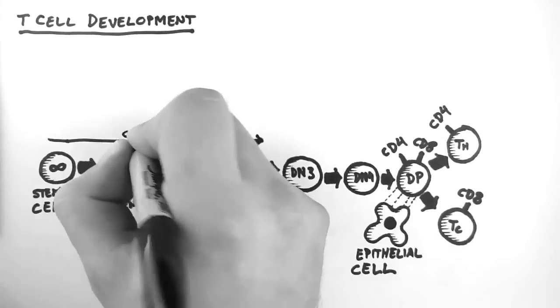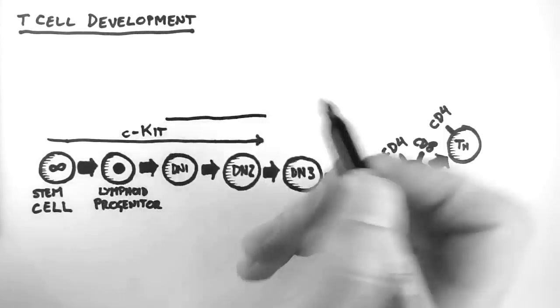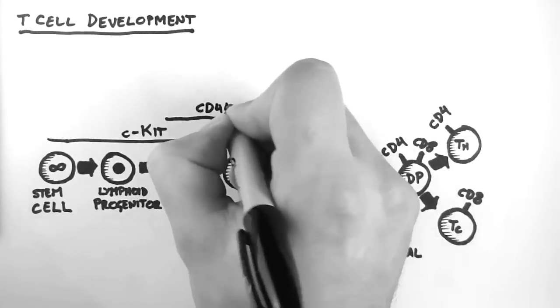So the first marker we are going to look at is C-kit. And it is expressed from the stem cell stage until its maximal expression at the double negative 2 stage. Now a characteristic of the double negative 1 stage and the double negative 2 stage is a marker called CD44.